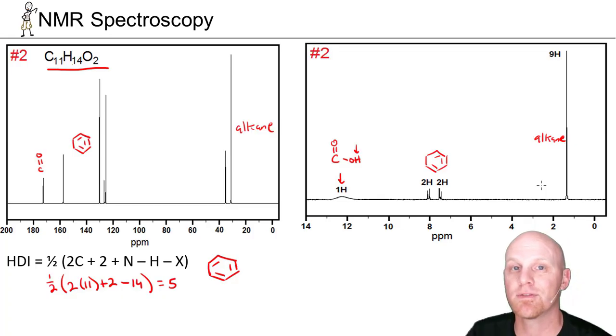If we take a look at the integrations, and again, these have been done for you, a common practice on an exam. It's a 1 to 2 to 2 to 9 ratio, and that adds up to a grand total of 14. So it actually is the exact number of ratio of protons, not just like the most reduced whole number or something of that sort.